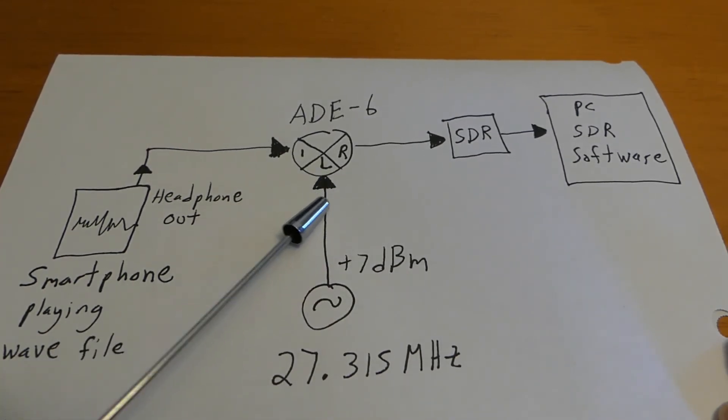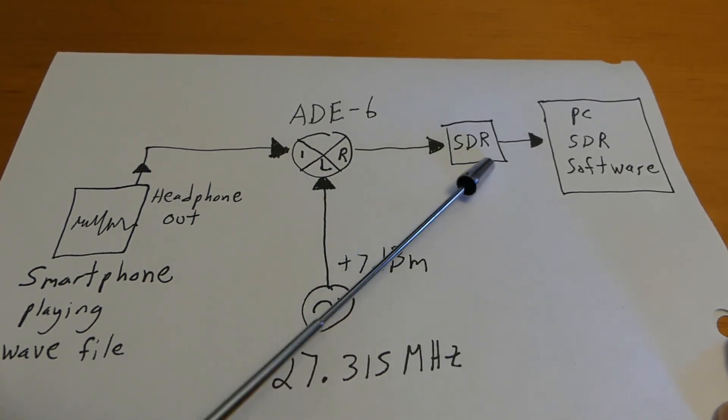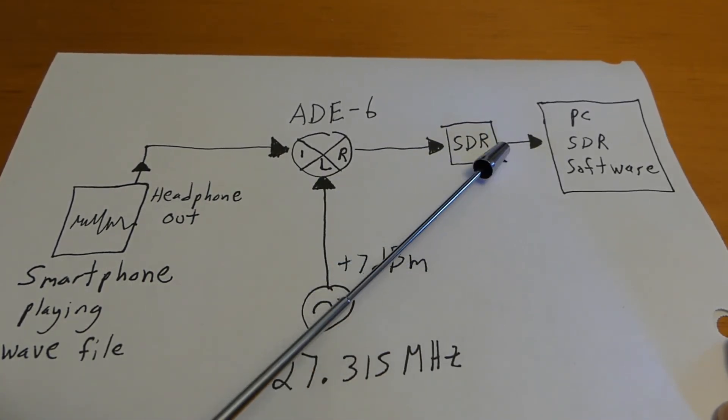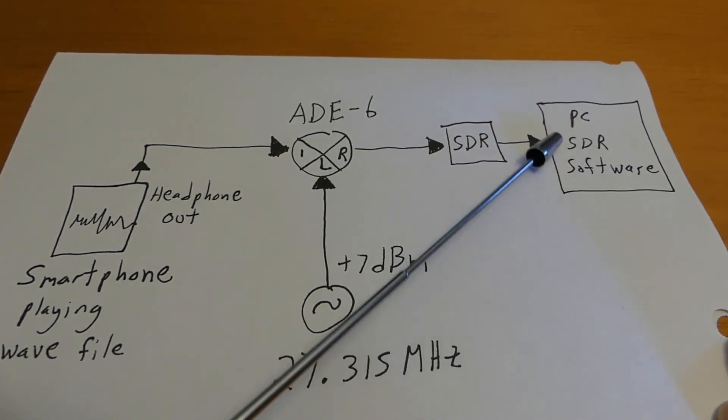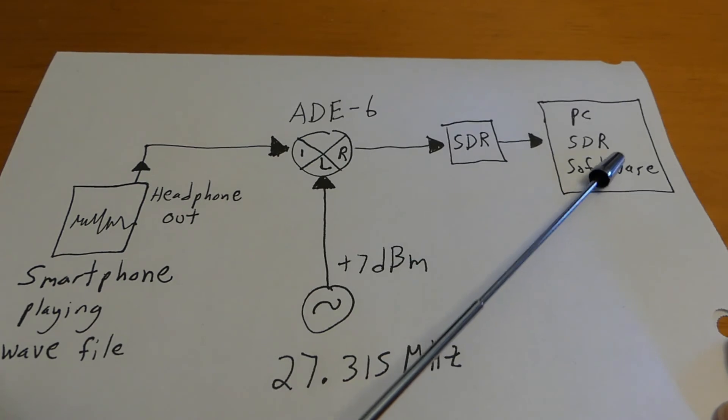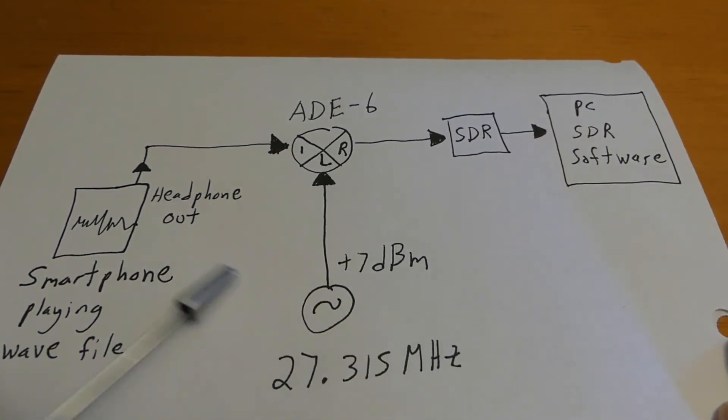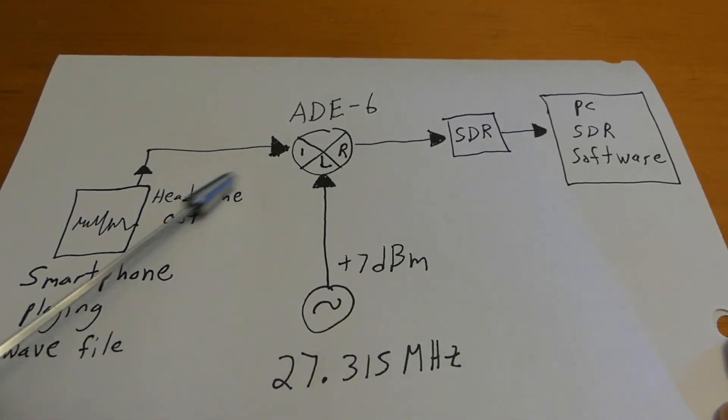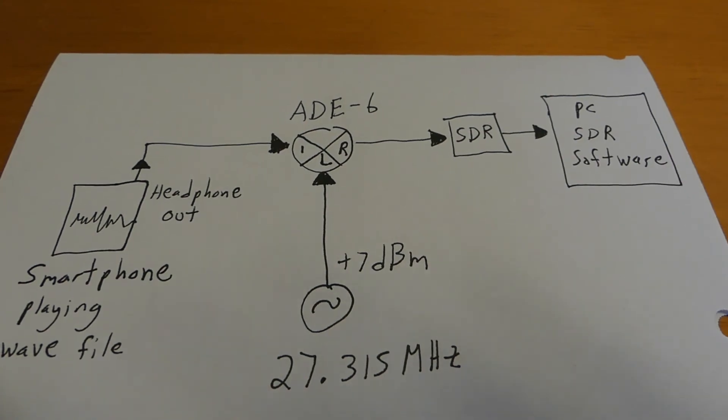Down here will be my local signal oscillator and it'll be oscillating at 27.315 megahertz plus 7 dBm going up to the L port of that mixer there. We'll be taking the R port of that mixer, plumbing that over to my little SDR radio dongle and that'll be connected to my computer by the USB port. I'll be firing up my PC SDR software and we'll see what kind of spectral images we can see. So this is our lab setup here. Let's go set it all up and show you guys the system working.